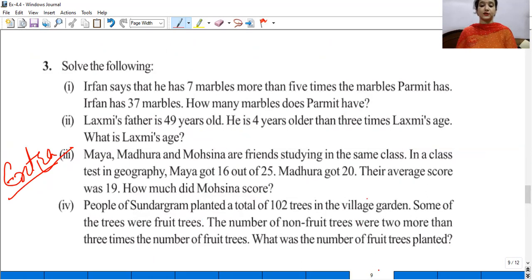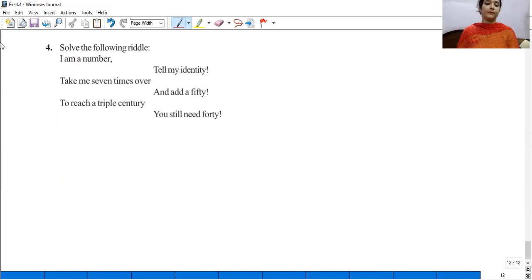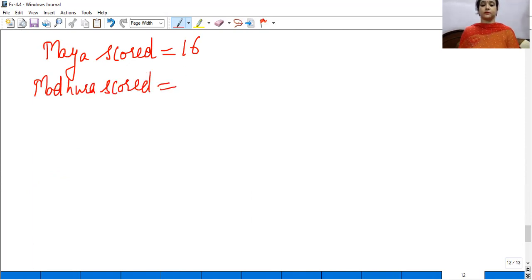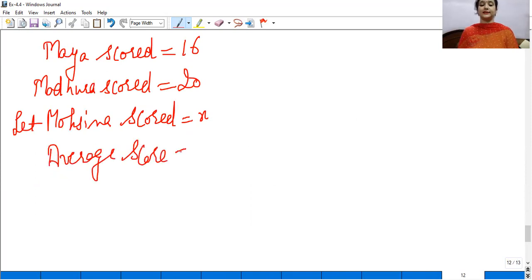How much did Mausina score? So Mausina, how much did she get? Maya scored 16, Madhura scored 20. Let's say Mausina's is x. Now their average score is given. There are 3 persons, so their average score is 19.